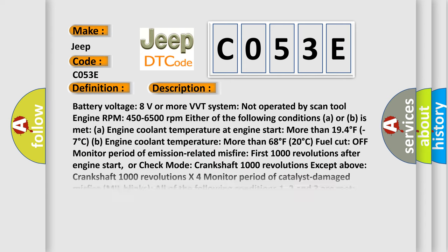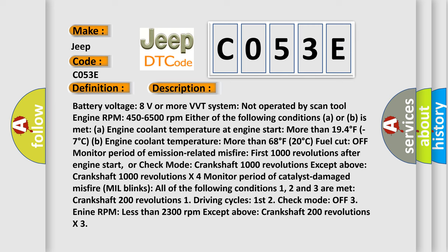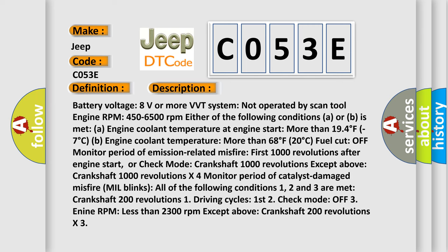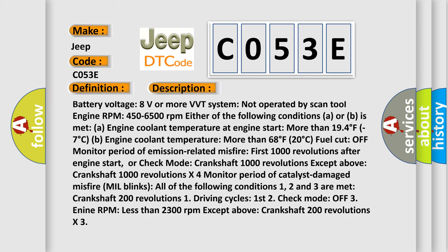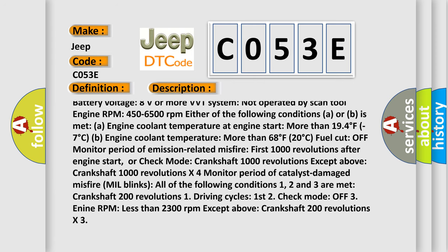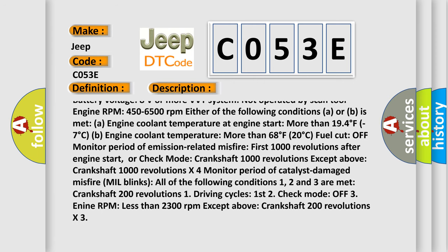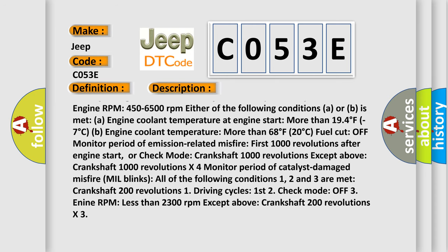The basic definition is Random or multiple-cylinder misfire detected. And now this is a short description of this DTC code: Battery voltage 8 volts or more, VVT system not operated by scan tool, Engine RPM 450 to 6500 revolutions per minute. Either of the following conditions A or B is met: A) engine coolant temperature at engine start more than 194 degrees Fahrenheit or 7 degrees Celsius, B) engine coolant temperature more than 68 degrees Fahrenheit or 20 degrees Celsius fuel cutoff.